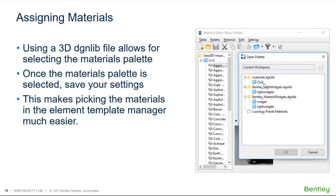Using a 3D DGN lib file allows for selecting the materials palette. Once the materials palette is selected, go ahead and save your settings to your DGN lib file — this is going to make picking the materials in the element template manager much easier.